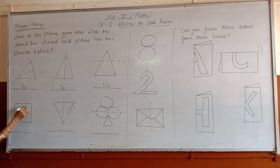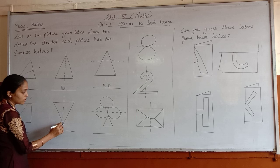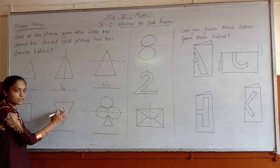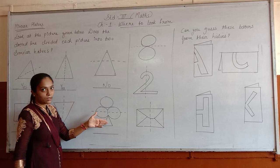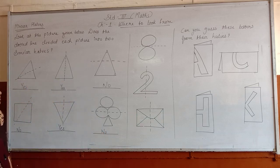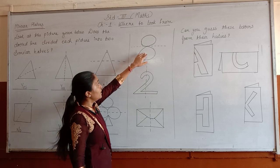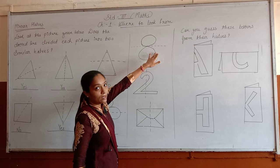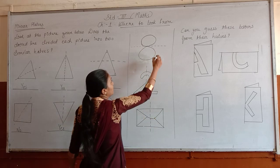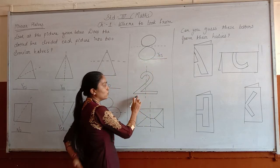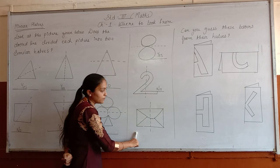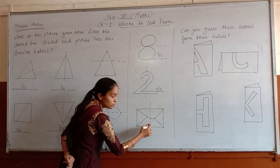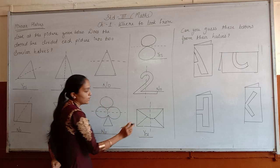Next is a square — this dotted line is here and this is also not divided into two similar halves. Next is also a triangle and this dotted line divides this picture into two similar halves — yes. Here in this picture both sides are not equal, so this picture is not divided into two similar halves. This is an angle — you can see both the sides are the same, so it is divided into two similar halves — write yes.